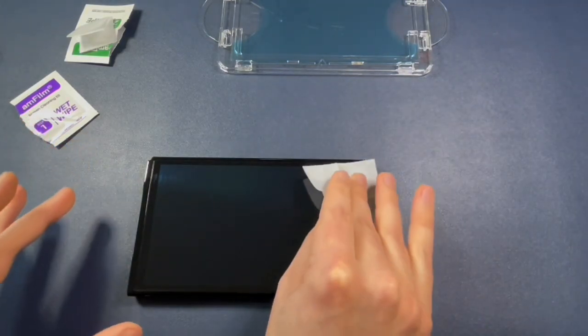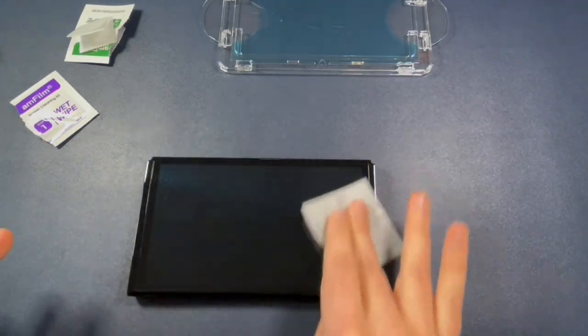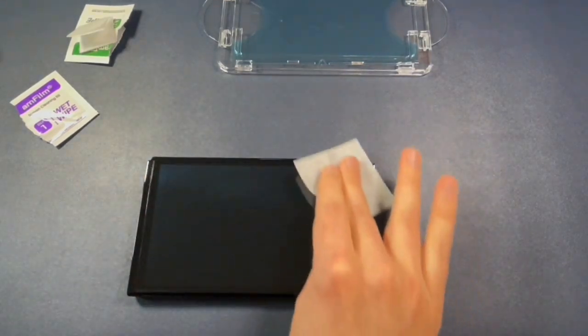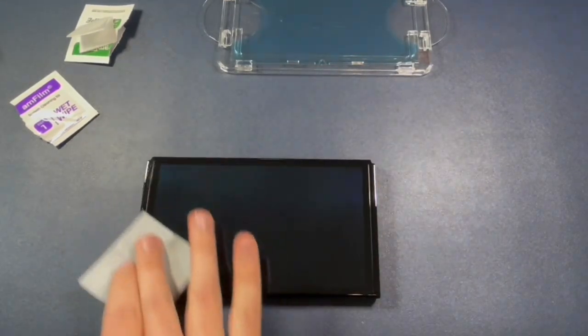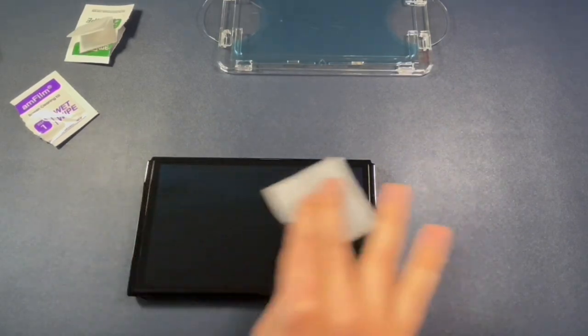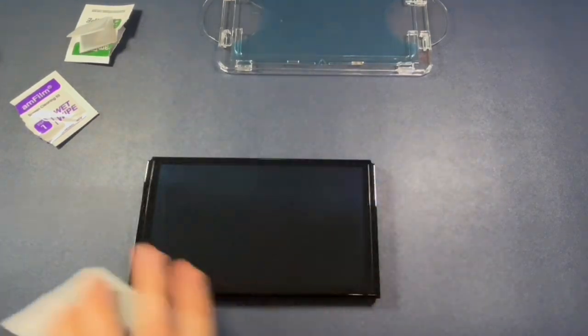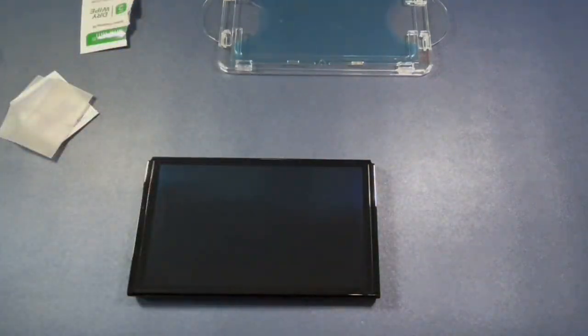Use the wet wipe. Go ahead and wipe it down. Soak it up. This will be the one and only moisture bath that this Nintendo Switch ever gets. That's to soak up the dust and then you want to hit it with the dry wipe real quick.